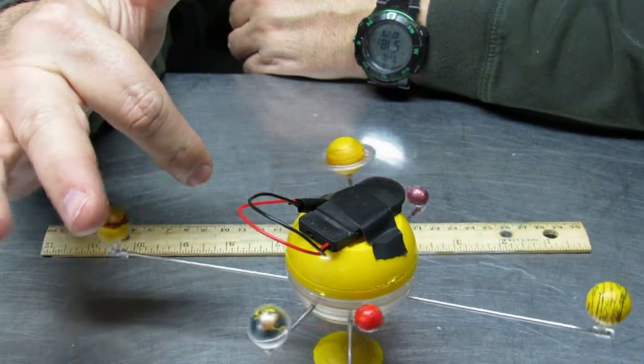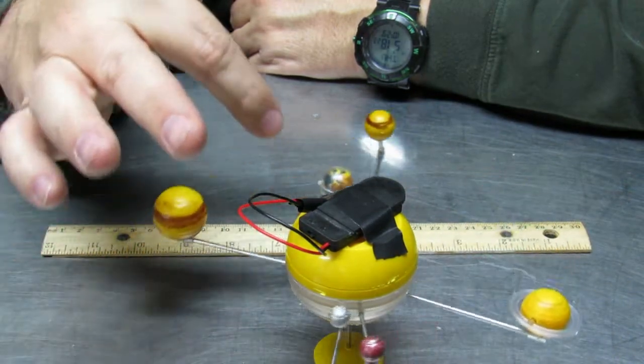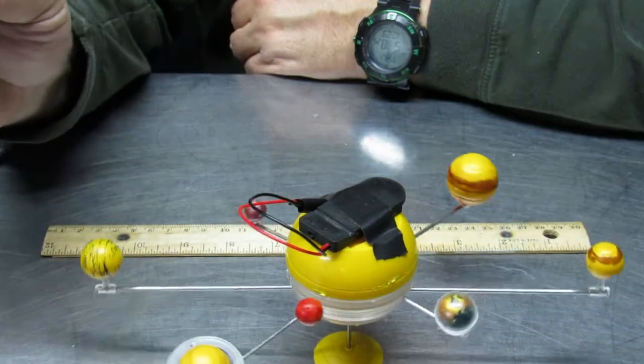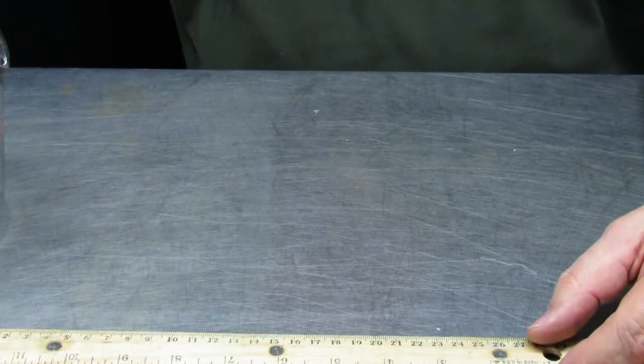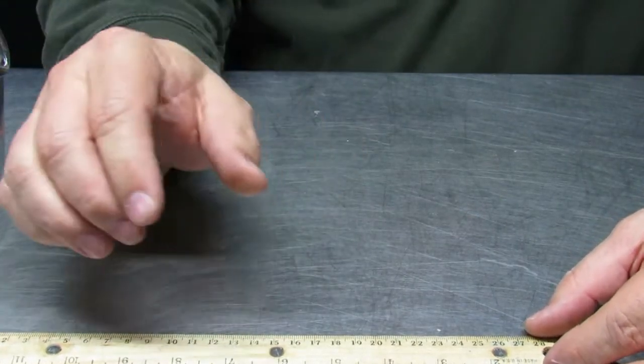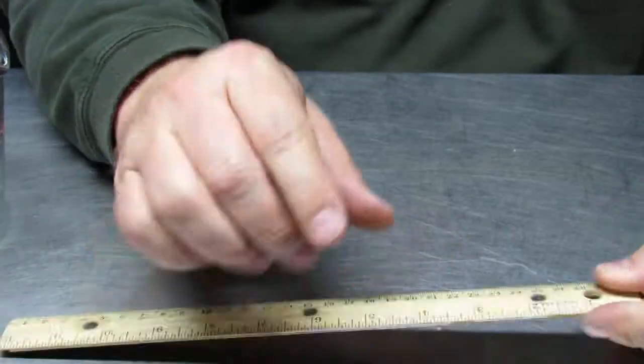But in measuring the distance between planets, one of the things they do is take the distance between Earth and the Sun and call it an astronomical unit. Then they use that as a measure of other things.